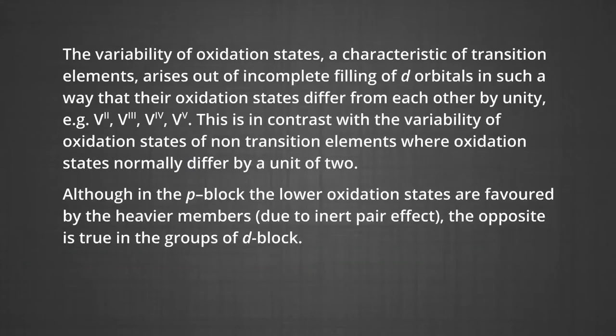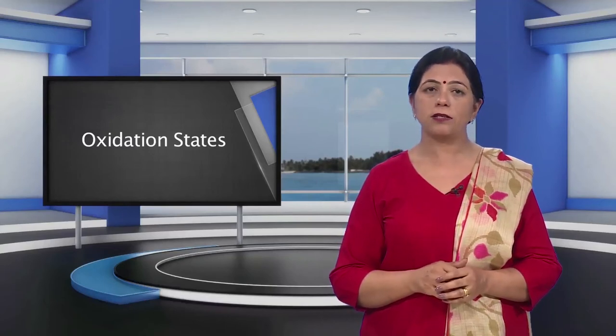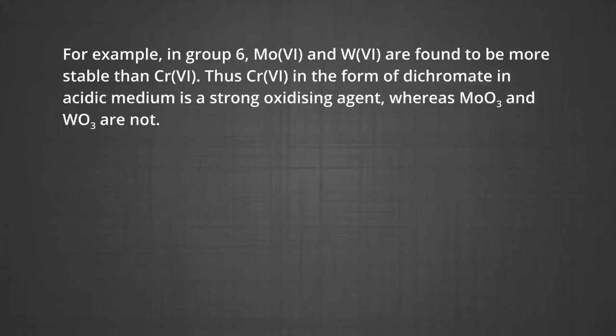Another interesting feature of the variability of oxidation states of D-block elements is noticed among groups 4 through 10. Although in the P-block the lower oxidation states are favored by heavier members due to the inert pair effect, the opposite is true in D-block groups. In group 6, molybdenum in +6 and tungsten in +6 are found to be more stable than chromium in +6. Thus, chromium in +6 as dichromate in acidic medium is a strong oxidizing agent, whereas molybdenum oxide and tungsten oxide are not.